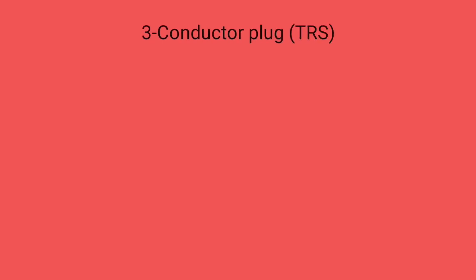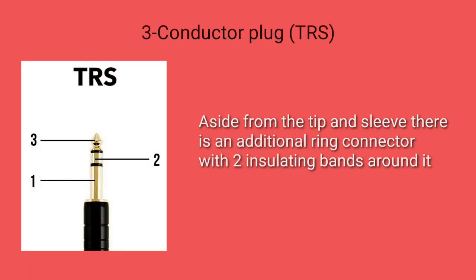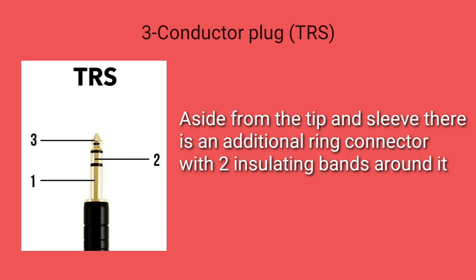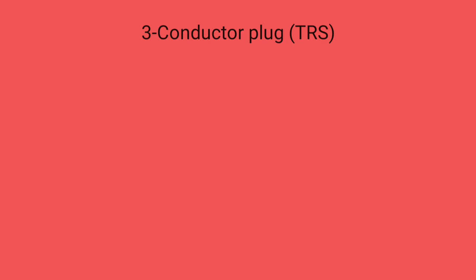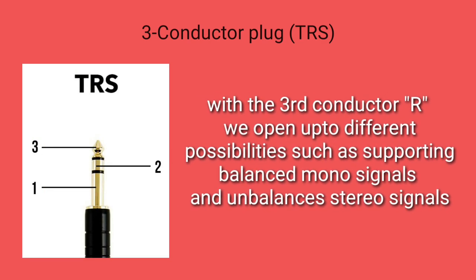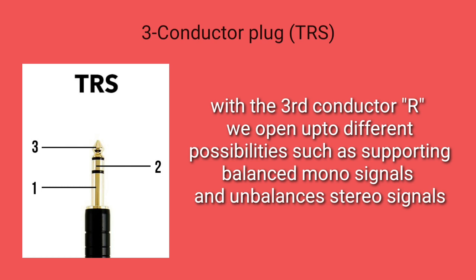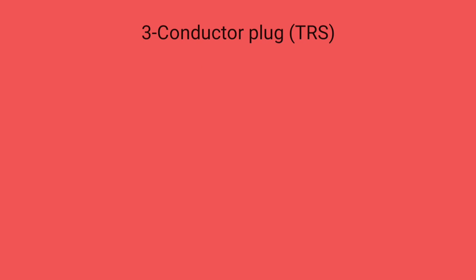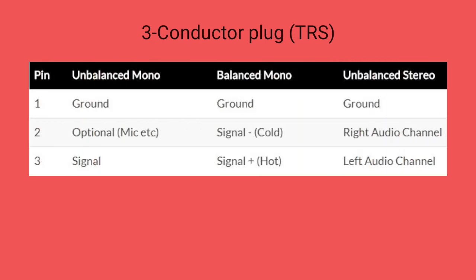Three conductor plug TRS. Aside from the tip and sleeve, there is an additional ring connector with two insulating bands around it. With the additional conductor R, we open up different possibilities, such as supporting balanced mono signals and unbalanced stereo signals. In mono, the first conductor is used for ground, second for mic, and the third conductor for signal.